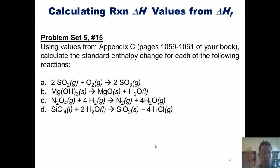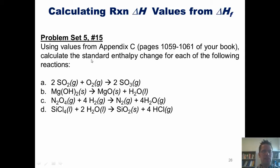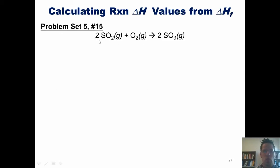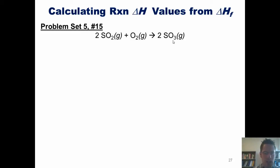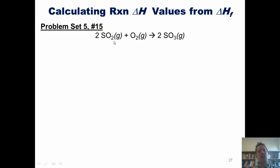Now that we've got that down, let's see if we can apply this process to some more difficult problems. Using our values from Appendix C, calculate the standard enthalpy change for each of the following reactions. Let's start with the first one: two moles of sulfur dioxide combining with one mole of O2 to form two moles of sulfur trioxide. We first want to show an equation for each individual product and reactant that indicates how it is formed from its parent elements.